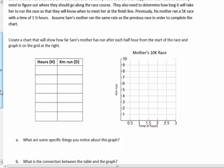Create a chart that will show how far Sam's mother has run after each half hour from the start of the race and graph it on the grid at the right. So, each half hour: a half hour, a whole hour, an hour and a half, two hours, two and a half hours, and three hours. That's what I can fill in in my chart.